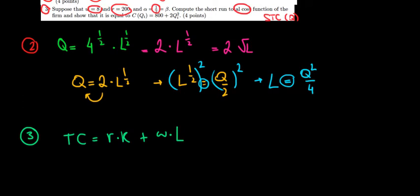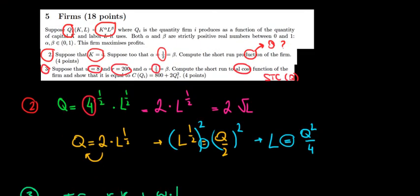Since this is a function of quantity, we're gonna write everything in terms of quantity. Total cost is gonna equal to the interest which is 200, times the capital which is fixed at 4 in the short run. Suppose that capital is 4, nothing changed.